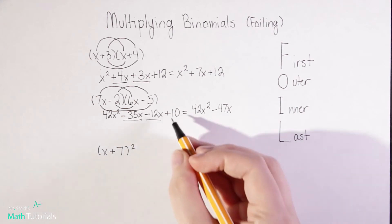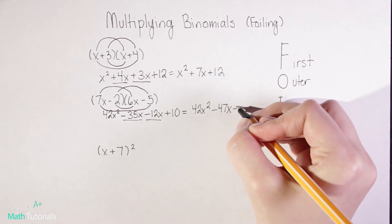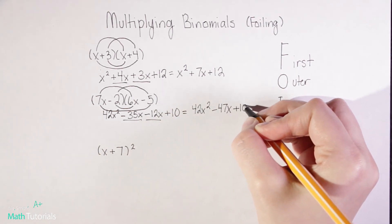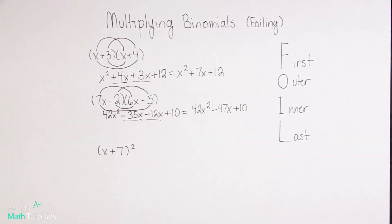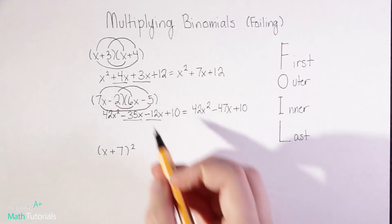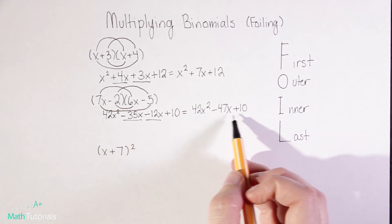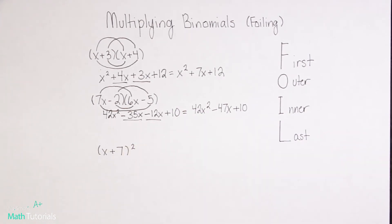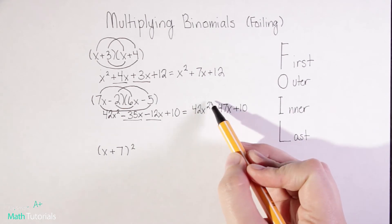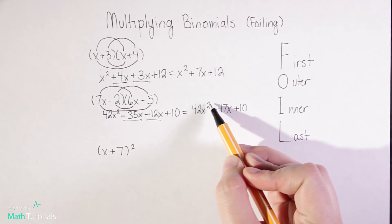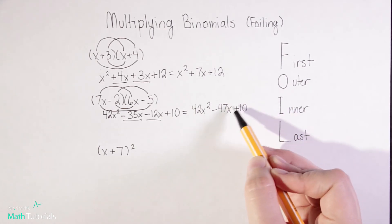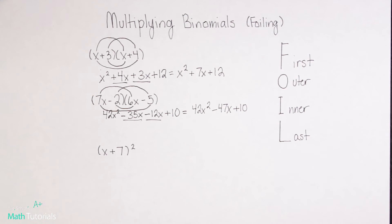And I have my constant of plus 10. It's good to note that if you do this right, you'll end up with your answer in standard form. We always want to have our highest exponent in descending order, and then our constant last. We talked about that in my last video.